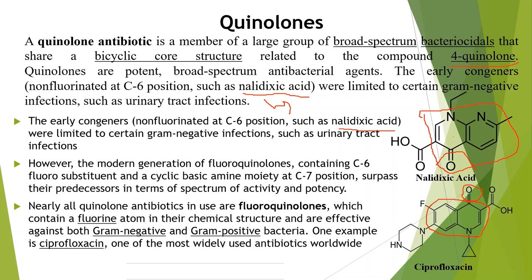In fluoroquinolones, there is a fluorine substituent at the 6th position. The non-fluorinated quinolone was nalidixic acid, which had limited activity against gram-negative bacteria infections but was used in UTI infections.